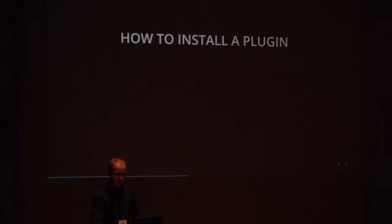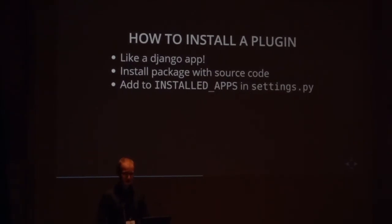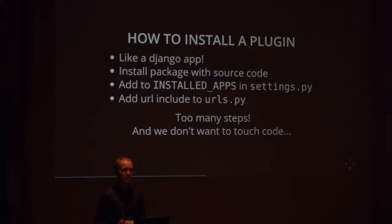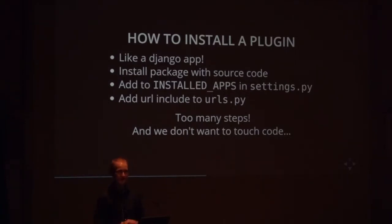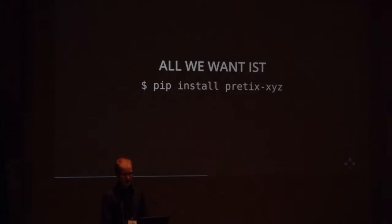If we just use those standard Django capabilities, then we can install what we now call a plugin like a Django app: get the source code, install it as a Python package, add it to the installed apps list in settings.py, include it in our URL configuration — and that's already getting too complicated. We want it to be very simple for users who install our web application to install a new plugin. We don't want them to touch the code base or go into settings.py. All we want them to do is pip install the plugin and maybe run migrations. That's the most we want them to do.